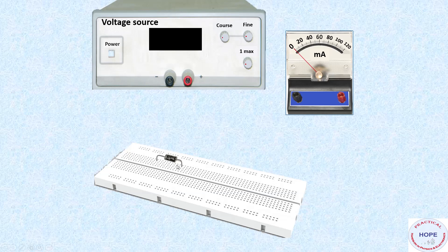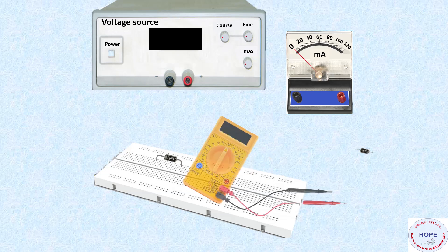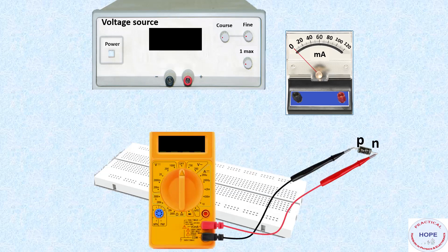First we have to check the diode. This we can do using a multimeter. So n of the diode is connected to positive of the multimeter and p-terminal of the diode is connected to negative of the multimeter. Now let's move the multimeter selector knob to the diode test position as shown.